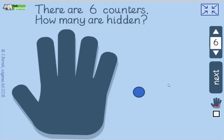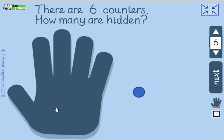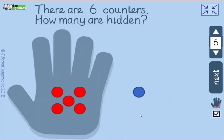Now we're going to use the number 6 and number facts for 6. There are 6 counters altogether. How many are hidden? There's 1 here — so if there's 1 here, how many must be under the hand? Turn to your partner. Yeah, 5. You can make a maths sentence: 6 take away 1 equals 5, or 5 add 1 equals 6.